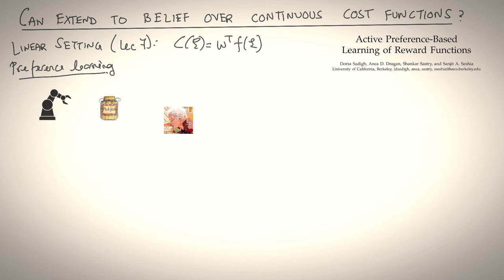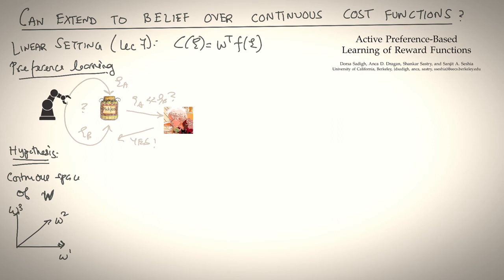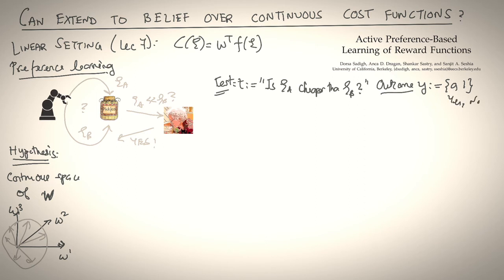So here, the cost of a trajectory is equal to W transpose times the features of that trajectory. So let's look at a concrete example. We have the same robot arm trying to help grandma, but this time the robot's confused about how to optimally grasp a jar of pickles. One set of costs would prefer that it grasp it from the left. Another set of costs would prefer it grasp it from the right. The robot asks the human, do you prefer A over B? And the answer may be something like yes. Based on this response, the robot can eliminate a lot of potential cost functions from being consistent. So what does the continuous hypothesis space look like? Think of it as all possible W vectors that can explain data. So in the beginning, you can think of a unit sphere where W vectors are uniformly spread in that unit sphere. So the test, as we just discussed, is a question that compares any two trajectories, psi_A and psi_B.